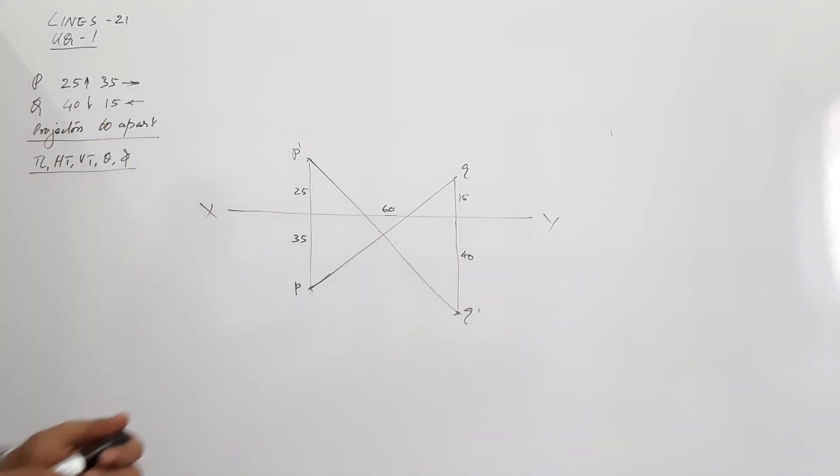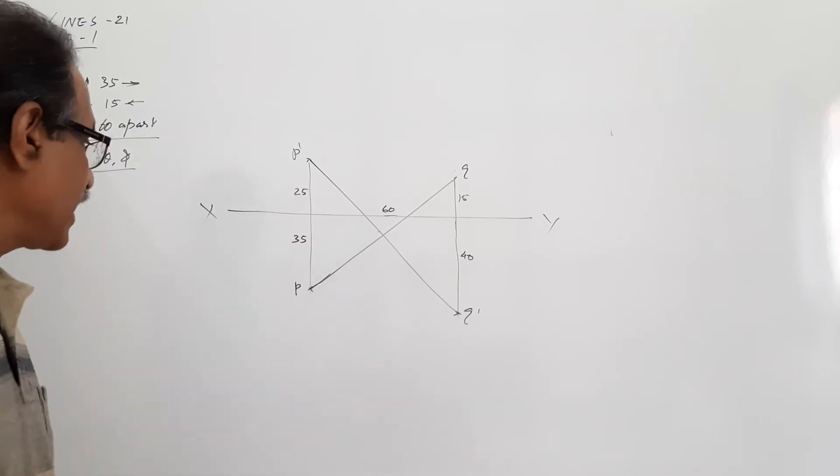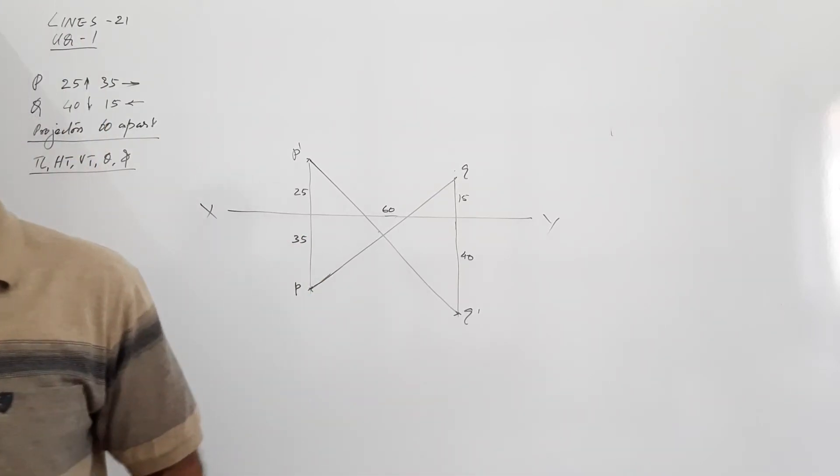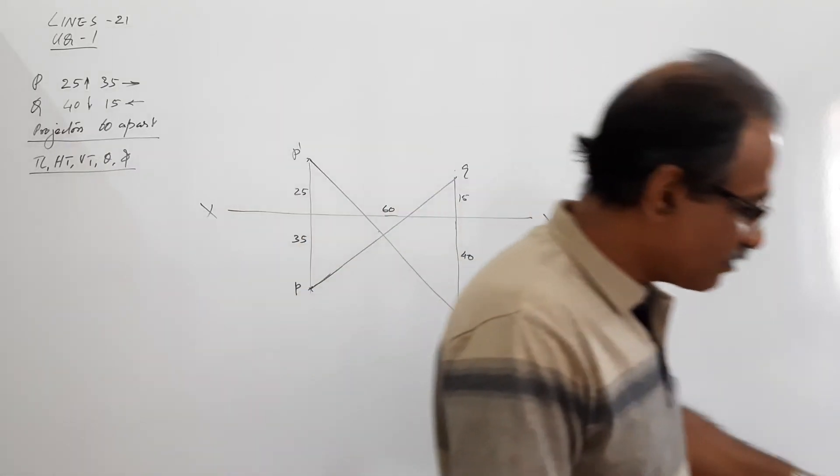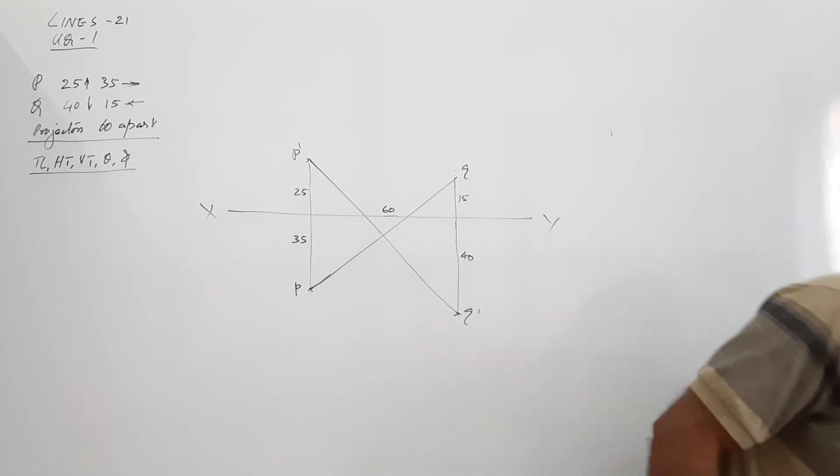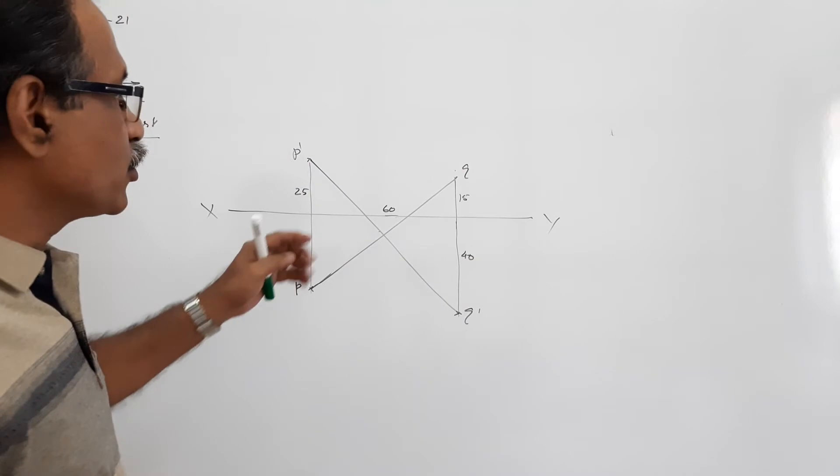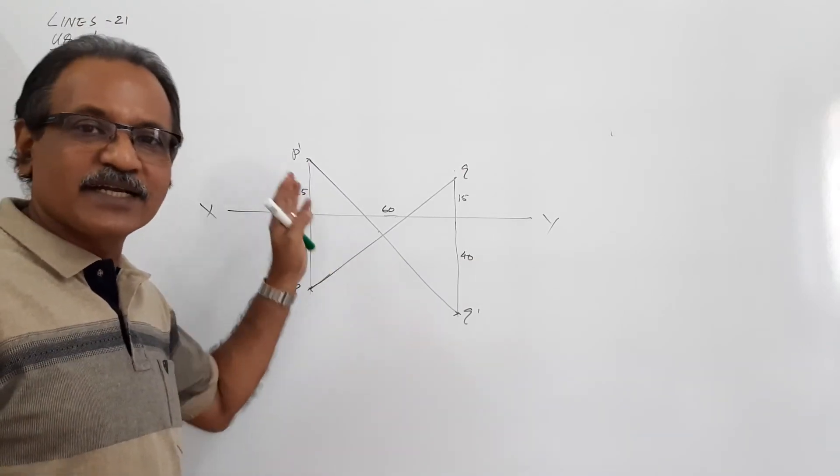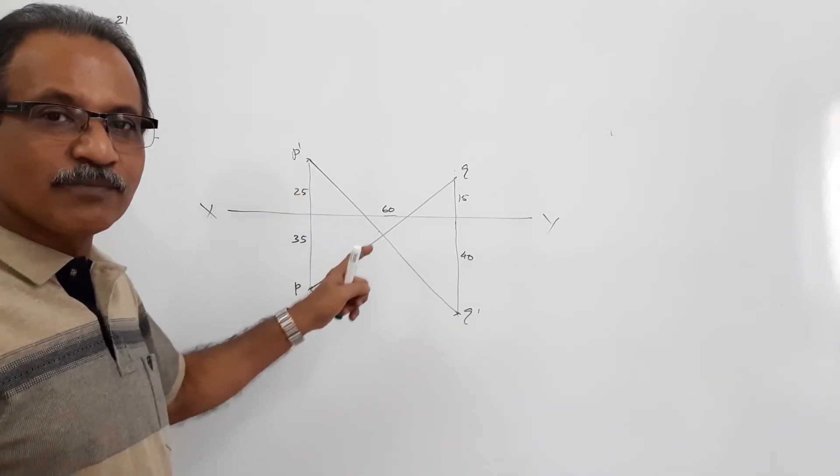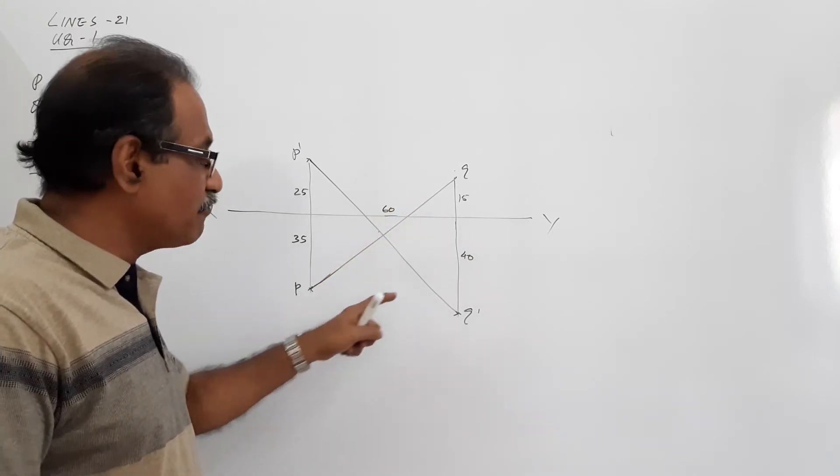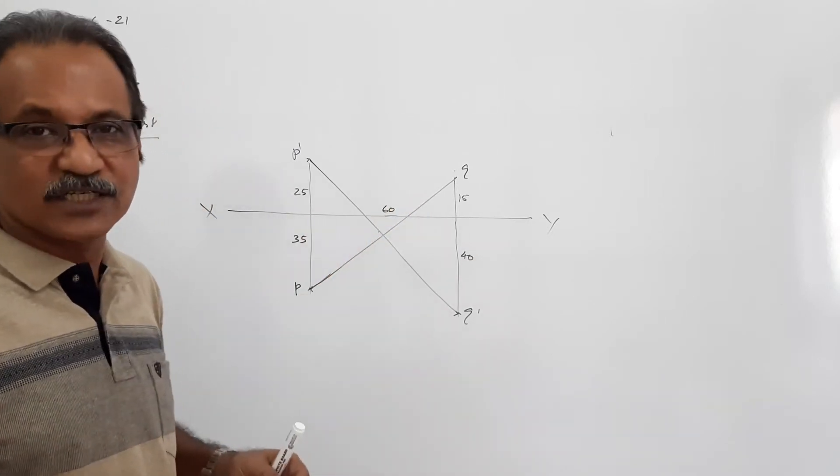We have dimensions here for you to record while drawing. We will erase if they overlap with any other line. Now you have drawn the plan and elevation from the given data. Then what do we have to do? You have to draw perpendicular to the elevation at P dash and Q dash.